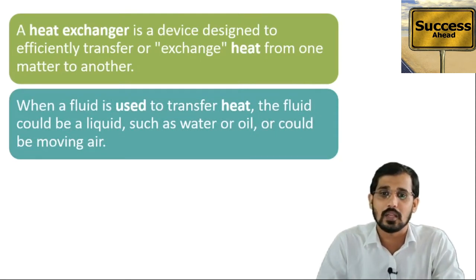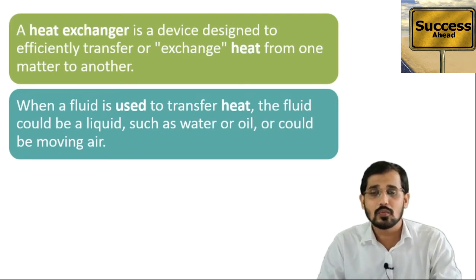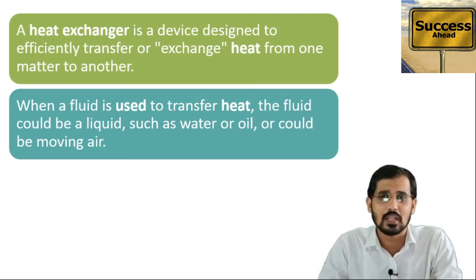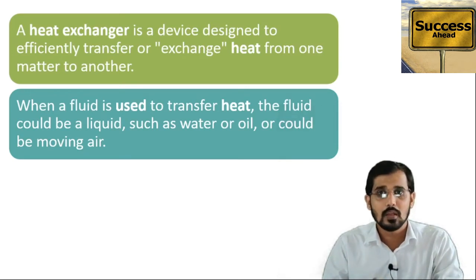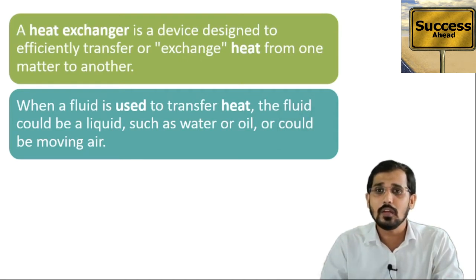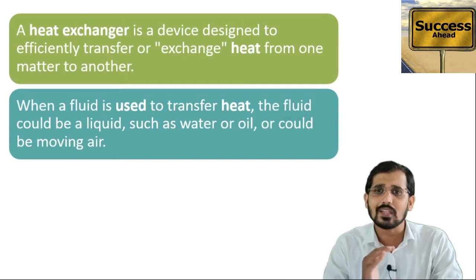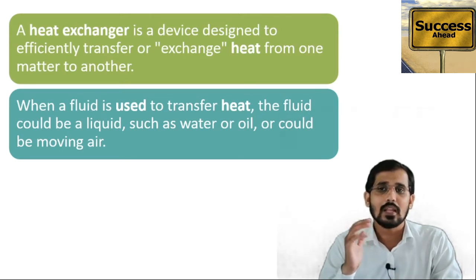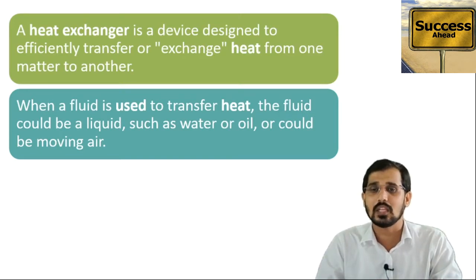When a fluid is used to transfer heat, the fluid could be liquid such as water or oil, or it could be moving air. For example, in a shell and tube heat exchanger, if we are using a hot fluid, we want to remove heat from the hot fluid by using a cold fluid. Fluid is nothing but one type of flowing stream — whatever stream has flowing characteristics, whether vapor phase or liquid phase, is nothing but a fluid.